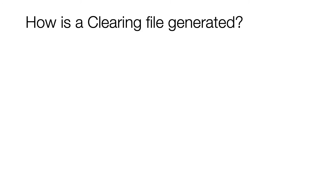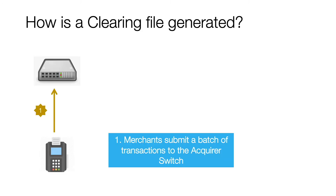Now let's look at how a clearing file is generated. Merchants batch a set of transactions — usually at the end of every day — and submit it for settlement to the acquirer. In a POS machine there is a button called settlement, and the merchant clicks that button to submit. Merchants with a large volume of transactions can also submit multiple batches on a given day, and merchants get paid only after they do the settlement to the acquirer.